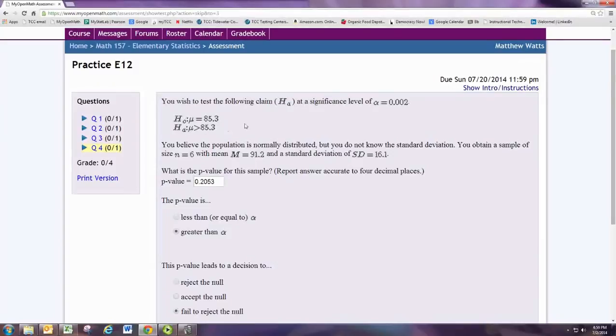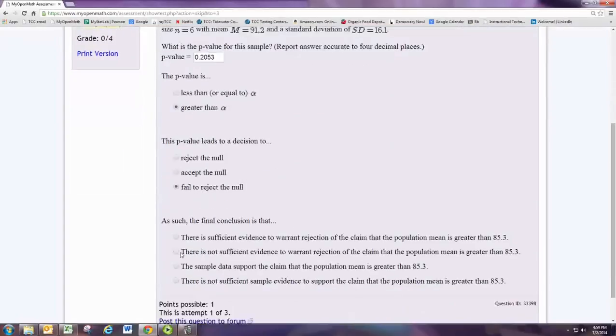Thus, failing to reject the null fails to support the claim. We usually say there is not sufficient evidence to support the claim that the population mean is greater than 85.3.